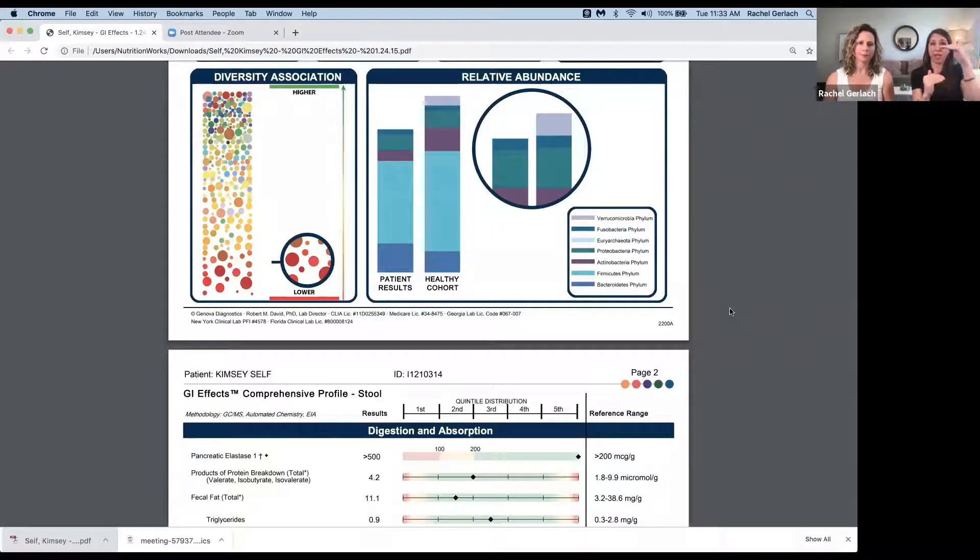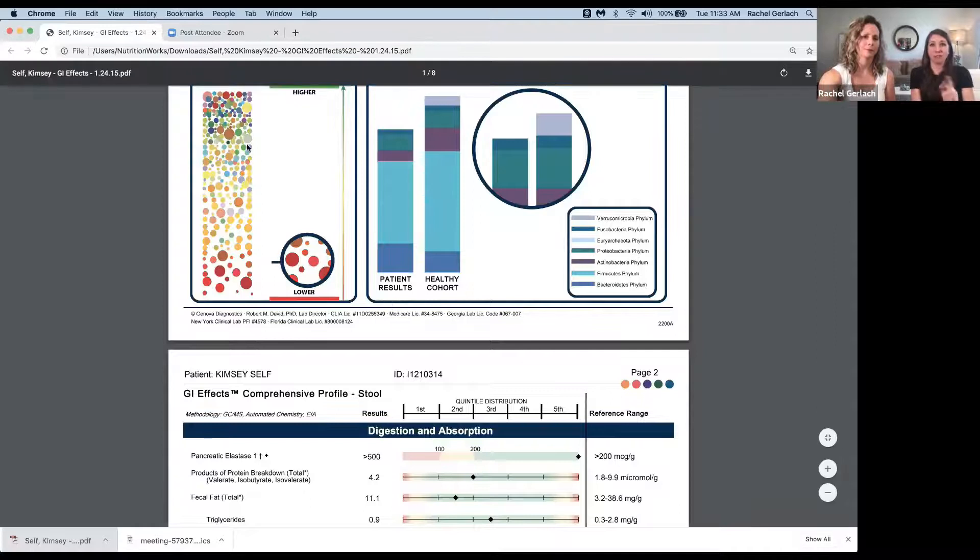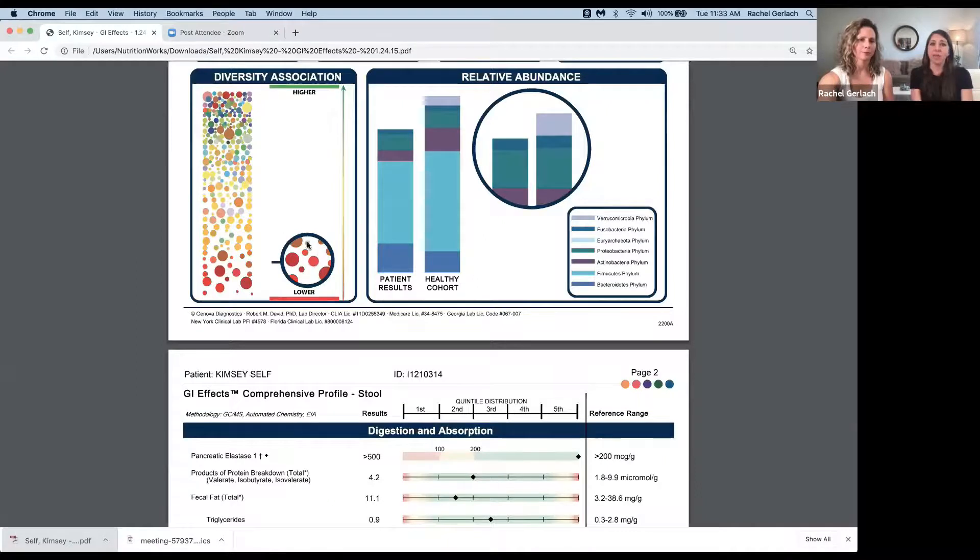A couple things that we see commonly are the flip of that. So we have low diversity right here, and this would be the equivalent of a city having only doctors and lawyers.